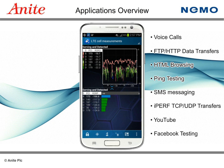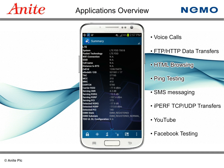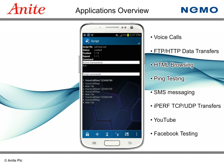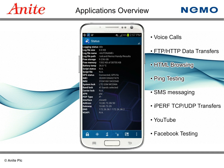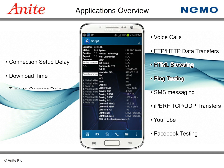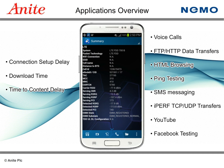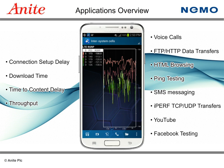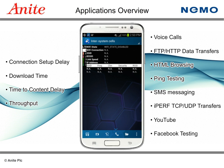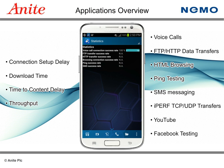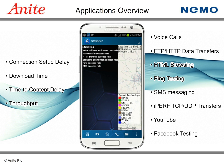Nemo quality of service and quality of experience key performance indicators include connection setup delay, download time, time to content delay, throughput, and others. All metrics are available in real-time when testing the network manually or through automated scripts.